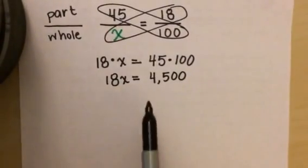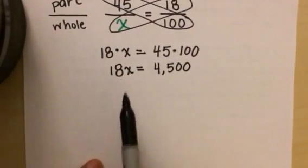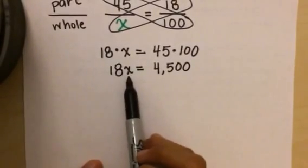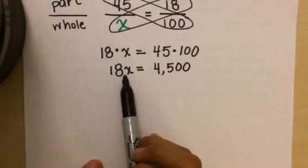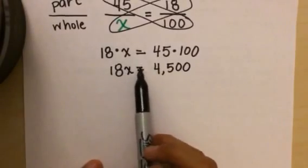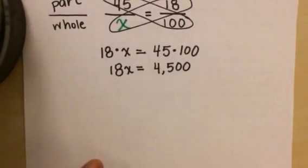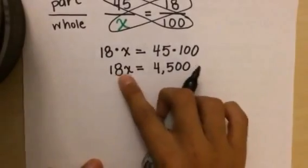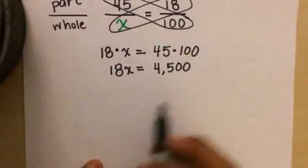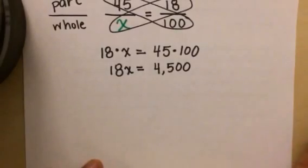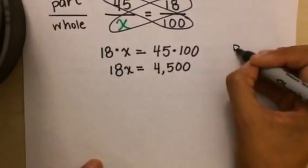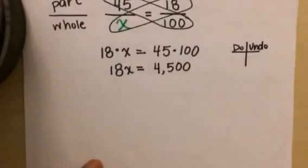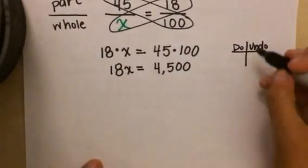Now I'm down to what we call a one-step equation. It's a one-step equation because we're only doing one math operation over here—we're just multiplying 18 times some number. We don't know what the number is, which is why we have an x. If I'm multiplying, that means I'm doing multiplication, and the inverse of multiplication is division. If you want, you can make a do-undo chart over here to help with your inverse operations. If I'm doing